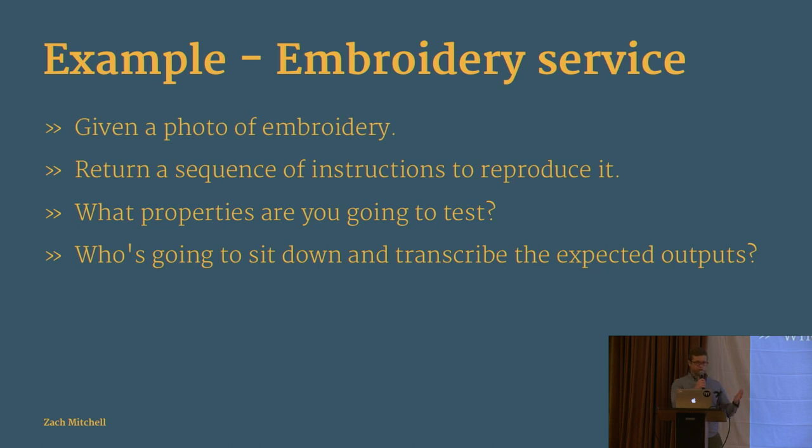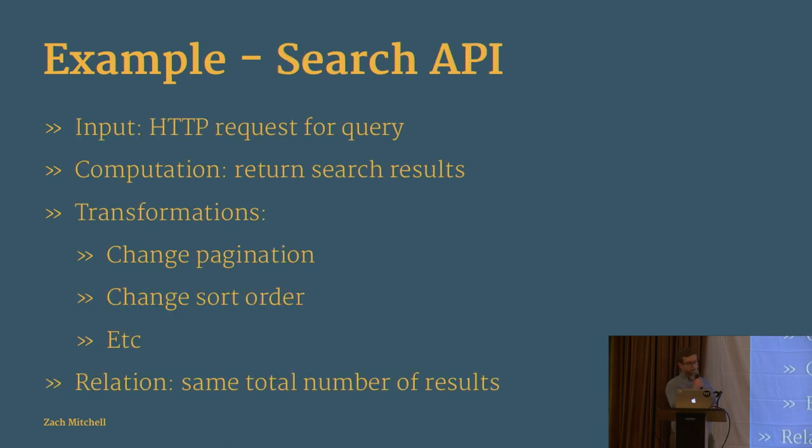What about a search API? You provide a request as your input, and you want to return search results. Transformations could be changing the pagination, changing sort order, stuff like that, and assert that you still get the same total number of search results back.